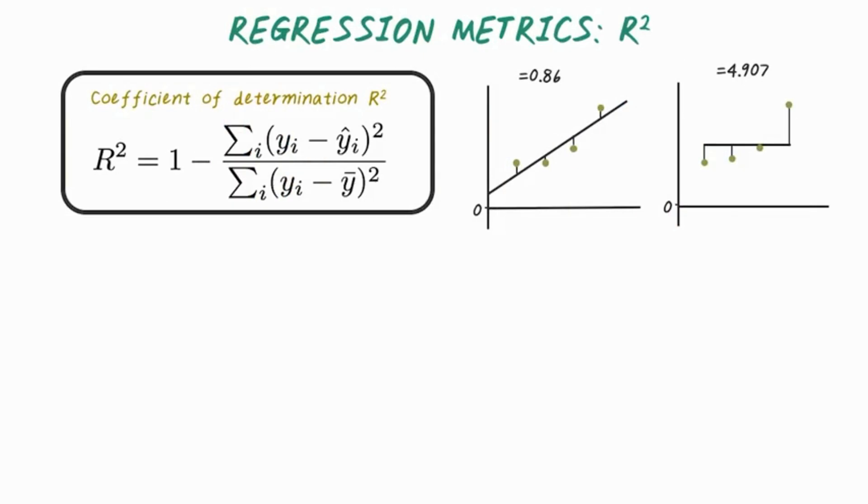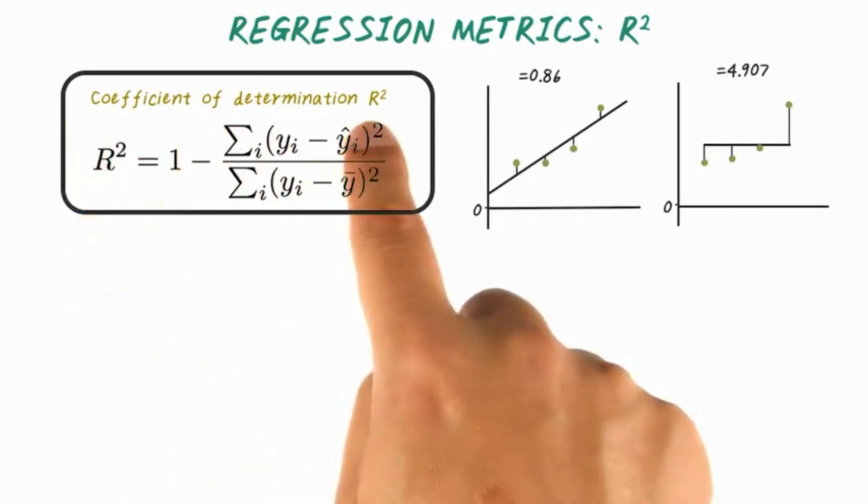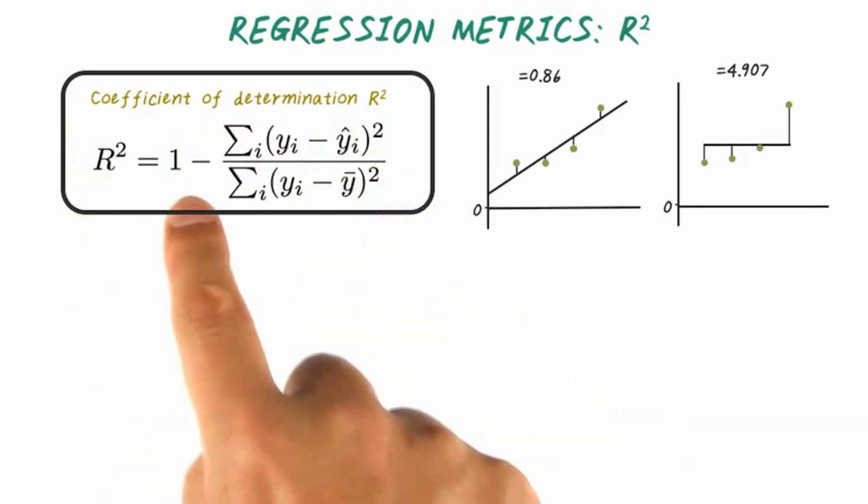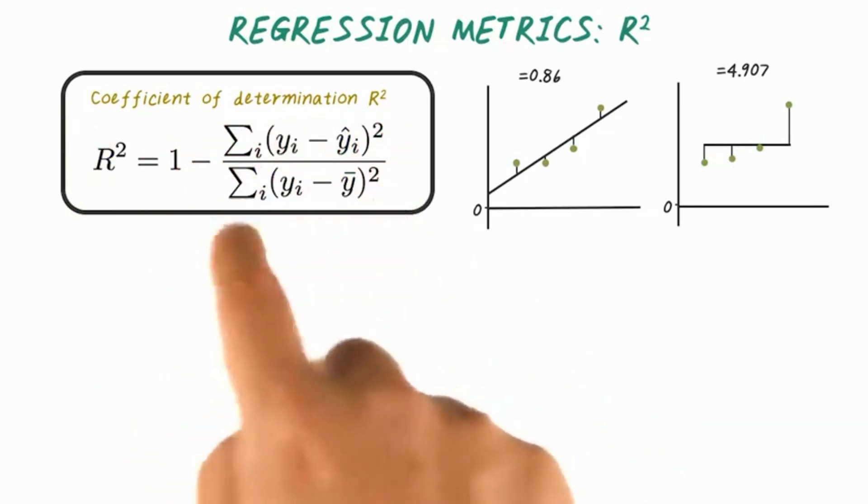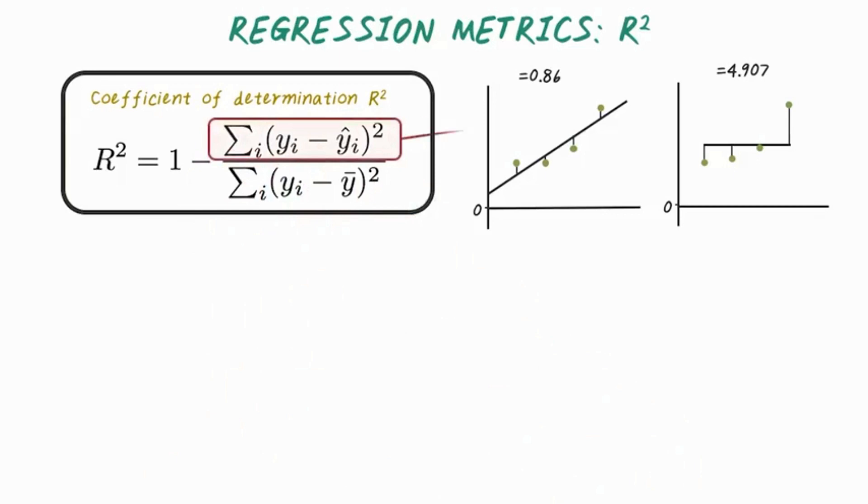Formally, R squared, or coefficient of determination, is one minus the ratio between MSE and variance. For example, if we have a linear regression model looking like this, the mean squared error can be equal to 0.86.